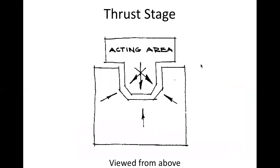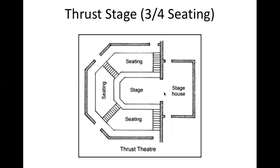The next seating configuration is called a thrust stage. Here you find an acting area that comes out into the audience, but also leaves some performance space towards the back, so you can put your scenery back there and your actors can come out and interact more closely with your audience. Here's a more detailed picture, a ground plan from above. You can see how the stairs feed into both the audience and the performance space, and again back here you can put your scenery.